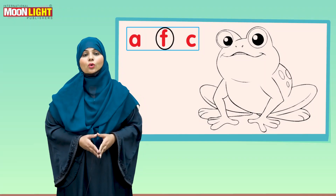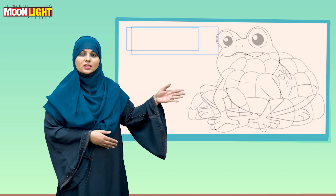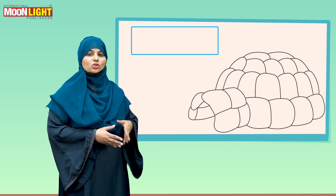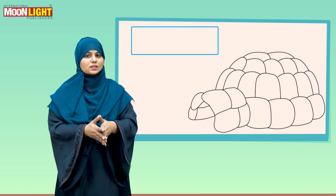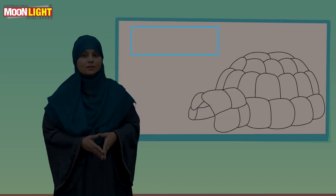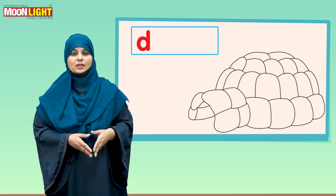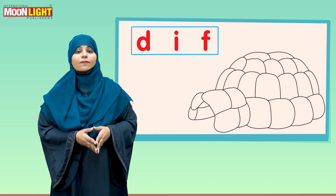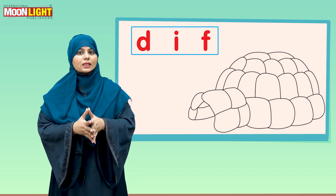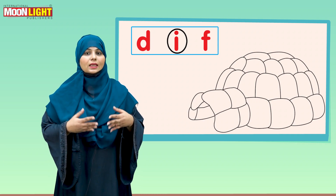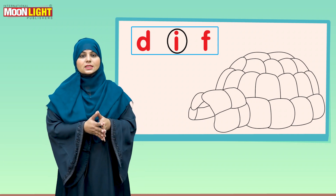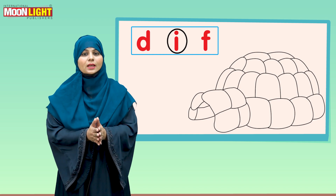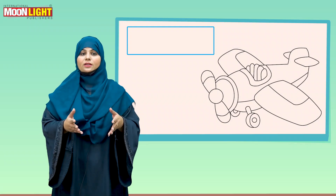Now there is another picture, and this is the picture of frog. There are three letters: the first one is A — A says 'a'; the second one is F — F says 'f'; and the third one is C — C says 'kh'. Focus on the initial sound of frog. We are going to encircle letter F, because F says 'f' and F is for frog.